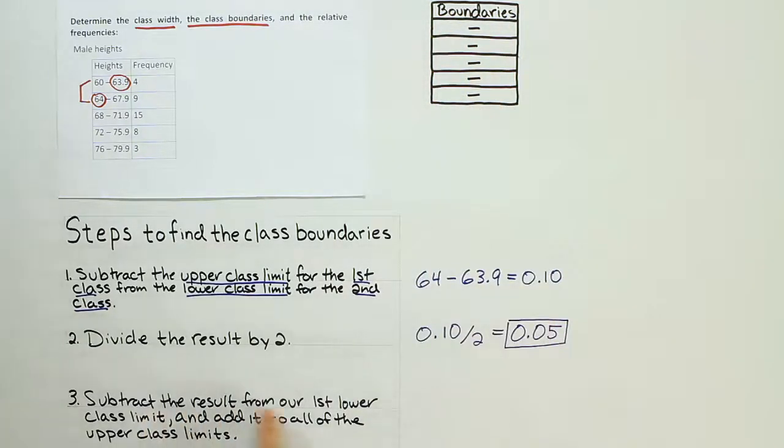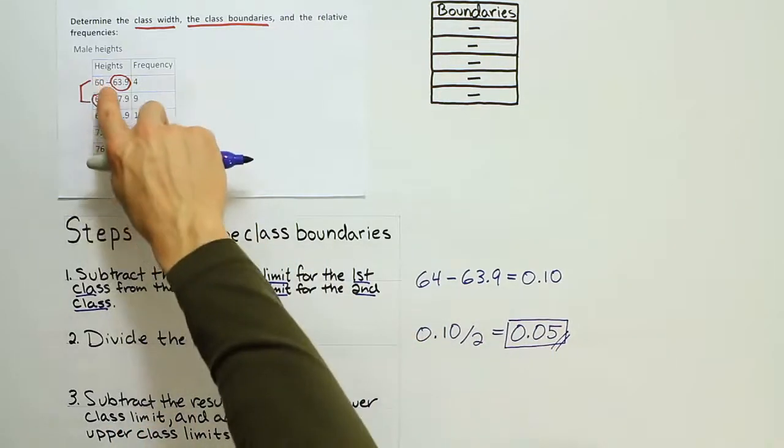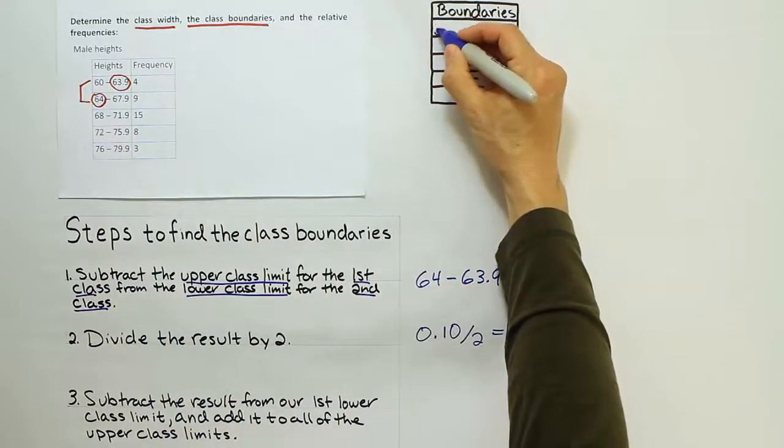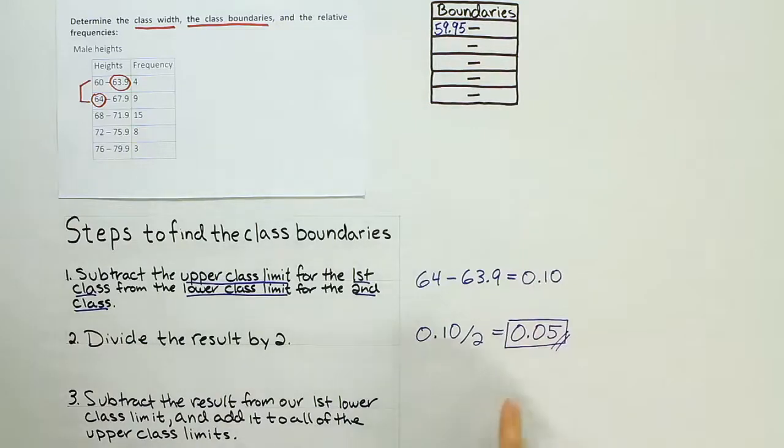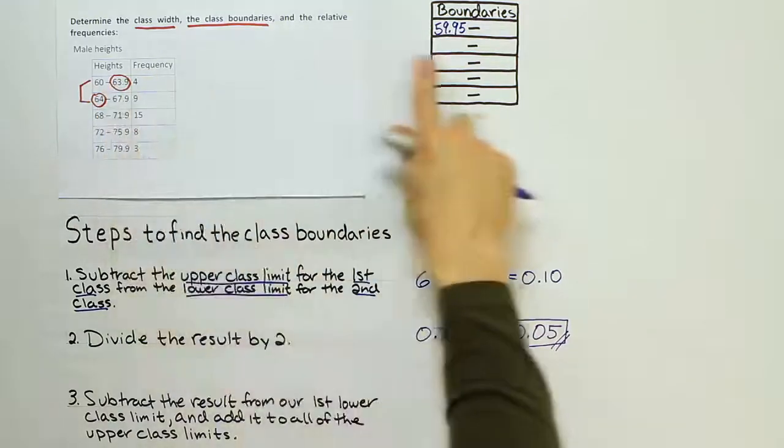Okay, so subtract the result from our first lower class limit and add it to all the other upper class limits. So we're going to take this number, the 0.05, and we're going to subtract that result from our first lower class limit. So in other words, we're going to take 0.05 and subtract it from 60. And if you do that, you're going to get 59.95. All right, so that's the first one. That's our first boundary.